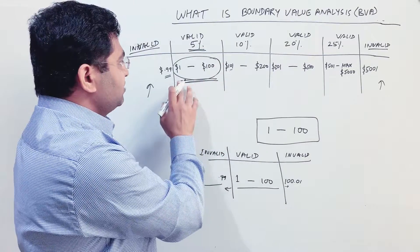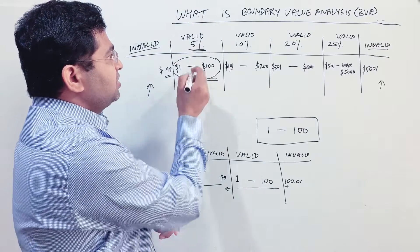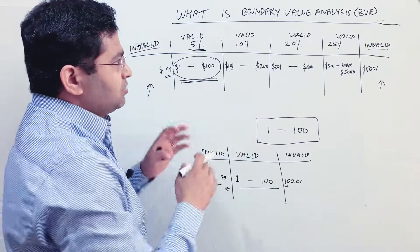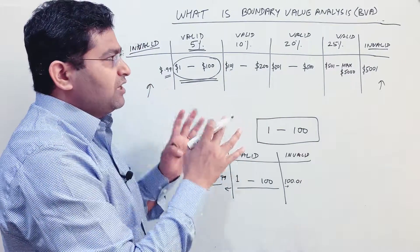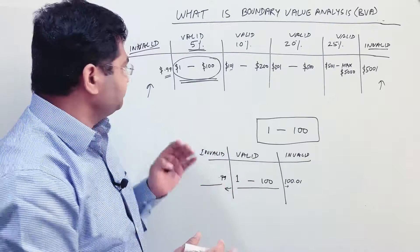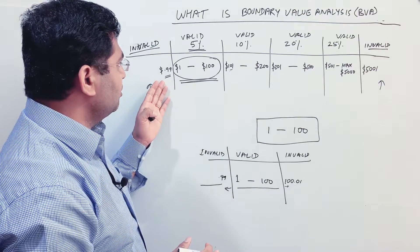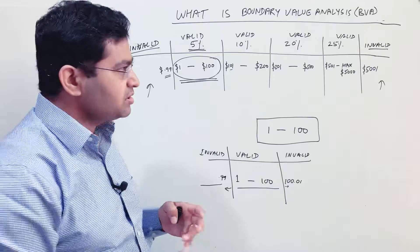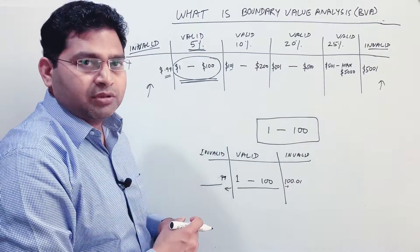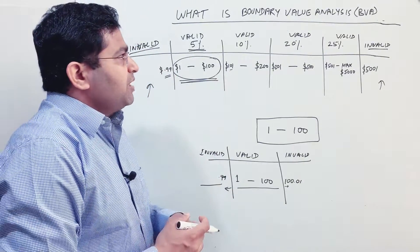In equivalence partitioning, we partitioned the discounts and the amounts that need to be purchased. For example, from one to one hundred dollars the discount is five percent; one hundred and one to two hundred dollars is ten percent. We also had an invalid partition: anything less than one dollar or above five thousand and one dollar should not be allowed.